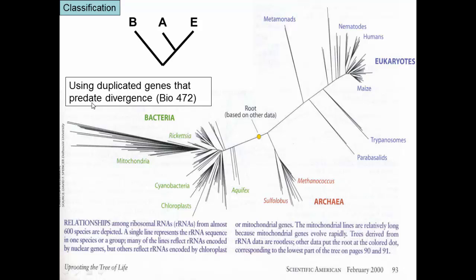Using duplicated genes — duplicated before the divergence of all three of these taxa from one another — we can actually put the root of the tree right here. The actual shape of the tree has bacteria as the outgroup for archaea and eukaryotes. That was a surprise: we didn't expect archaea to be more closely related to eukaryotes than to bacteria. Follow-up studies have shown there are also other biochemical aspects of metabolism more similar in these two groups than either is to bacteria. So we have archaea and eukaryotes as sister taxa, with bacteria as the outgroup.